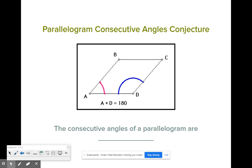Next, the parallelogram consecutive angles conjecture. So everyone kind of gets tripped up on the word consecutive. Consecutive kind of means next door or next to, side by side. They come one after another.